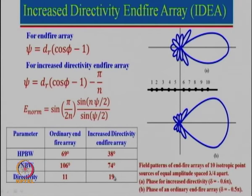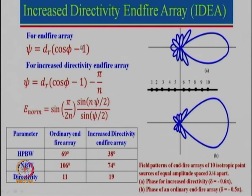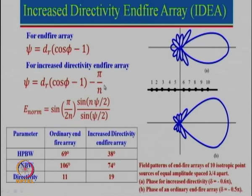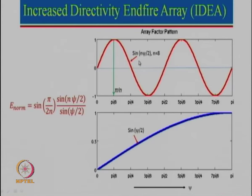For ordinary end fire the half-power beamwidth is 69°, whereas for increased directivity it is 38° — a substantial reduction. Directivity increases from 11 to 19. To understand how this is realized, consider the phase expression: ψ = 2πd/λ·(cosφ − 1). For increased directivity, we take an additional phase delay of π/N compared to ordinary end fire.